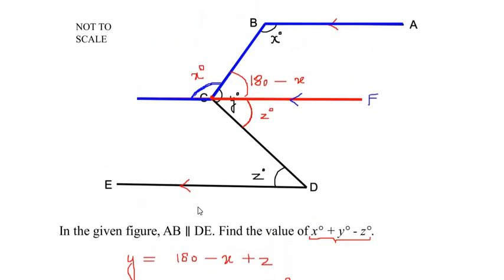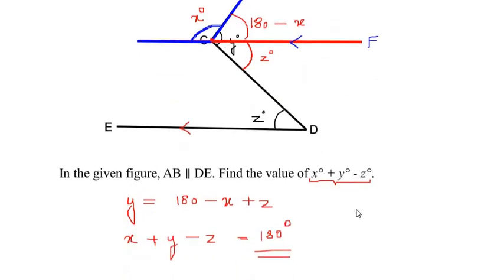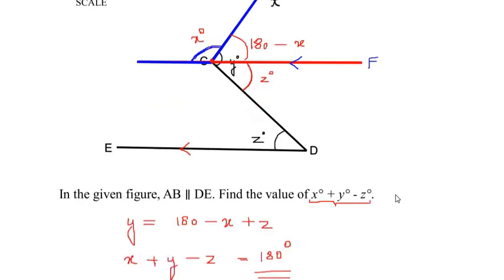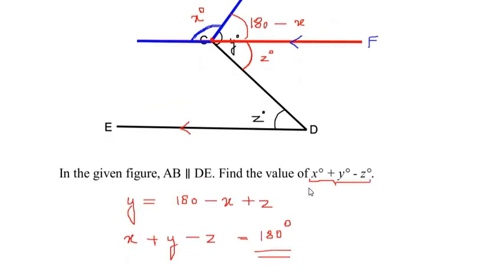So we have found the value of x + y − z, which equals 180°. Here we used the properties of parallel lines to find the value of the given angles. I hope you understood all the steps and liked the video. If you know any other way of solving this example, please comment below. If you're liking my videos, like, share, and subscribe to my channel. Thank you for watching.